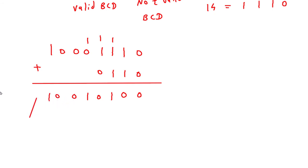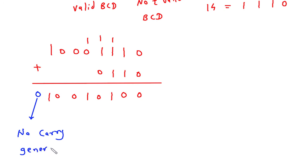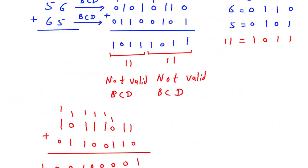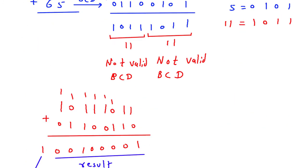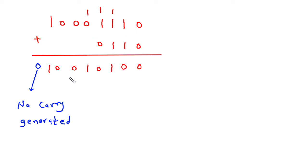Here we can see no carry is generated. If no carry is generated, the result is negative and we must find the 9's complement of the result.